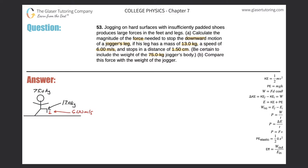Looking at the diagram, we have a jogger moving in the right-hand direction with his leg elevated. The leg weighs 13 kilograms and has a velocity of 6 meters per second in the downward direction. When the jogger's leg hits the floor, there are really two forces present. One force is the force necessary to stop the energy of the jogger's leg, and the other force needed is to balance his weight.